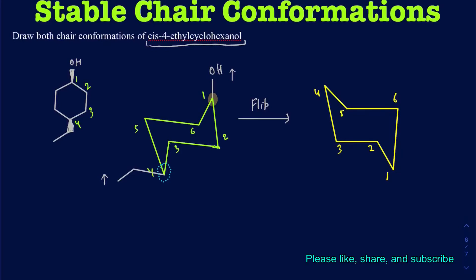Now what's happening here? The OH group was initially on the axial position. When you flip it, axials become equatorial and equatorials become axial. So the OH that was initially on axial is now on the equatorial position. And then the ethyl group that was on the equatorial position — when I flip it on carbon 4 — it's now going to be on the axial position. You can clearly see both of those are still pointed up, which is correct because initially both OH and the ethyl group were CIS and coming out of the page.